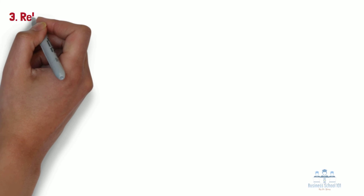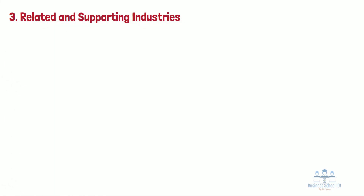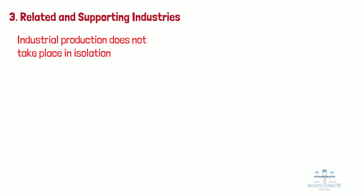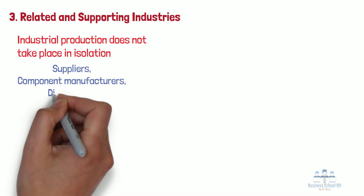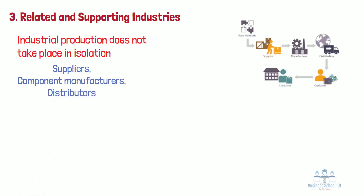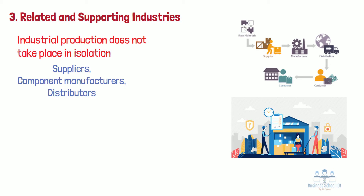Number three: related and supporting industries. As we know, industrial production does not take place in isolation, but rather relies on networks of suppliers, component manufacturers, and distributors. Therefore, the presence of related and supporting industries provides a foundation on which the focal industry can excel. In addition, companies are often dependent on alliances and partnerships with other companies in order to create additional value for customers and become more competitive. Suppliers are crucial to enhancing innovation through more efficient and higher quality inputs, timely feedback, and short lines of communication. A nation's companies benefit most when their suppliers themselves are global leaders. It can often take years or even decades of hard work and investments to create strong, related, and supporting industries that assist domestic companies to become globally competitive.